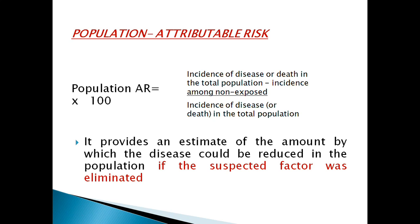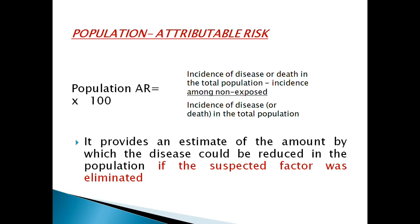That is all about case-control and cohort studies. It was a lengthy session, but try to understand the core concepts. Both study types are different but address the same scenario — one goes backward and one goes forward. The risk estimation is also opposite: one measures the odds of exposure, and the other measures the incidence of disease among exposed and non-exposed groups. Thank you.